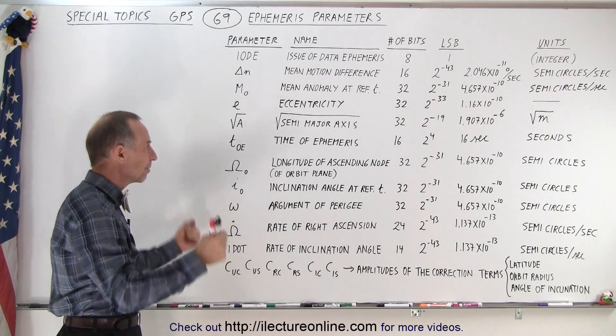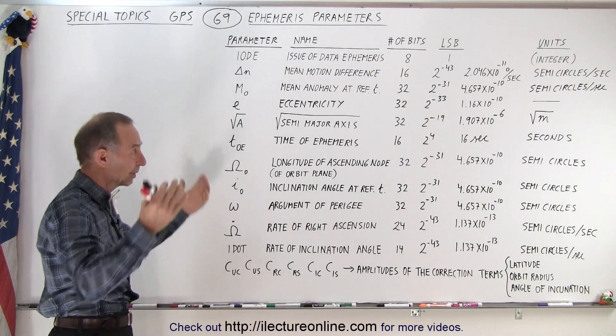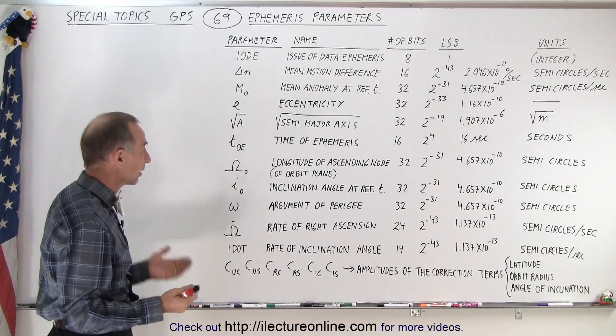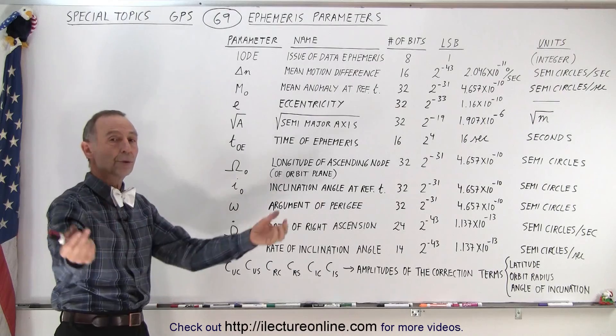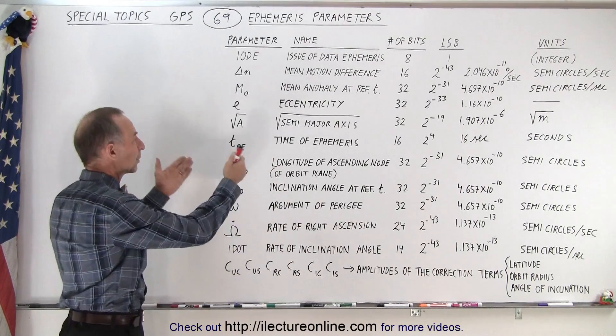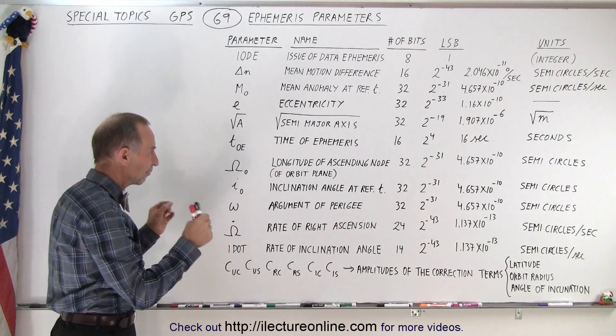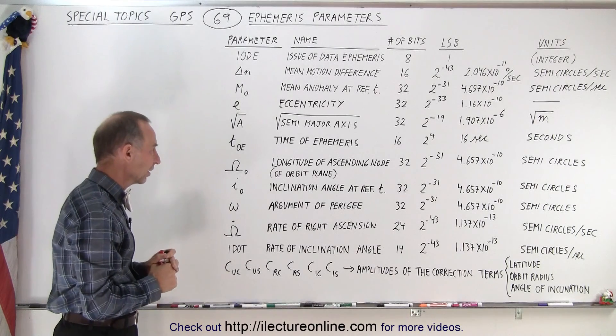And if the time doesn't match, if we're off by four hours worth of seconds, then you realize, oh, I'm looking at the wrong time of ephemeris and then we have to have a cutover to a new data set in order to be able to then properly figure out where exactly the satellite is.